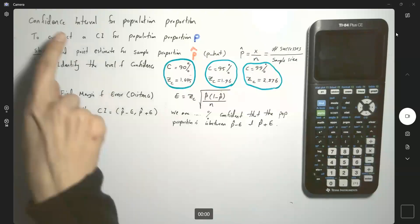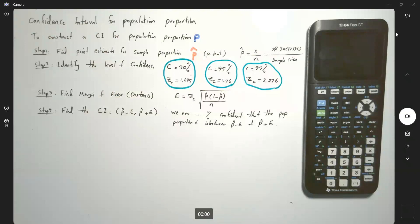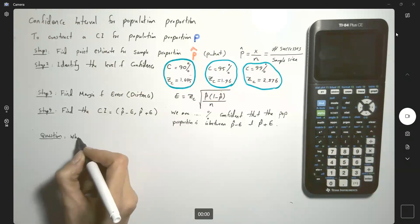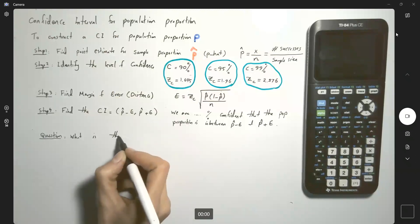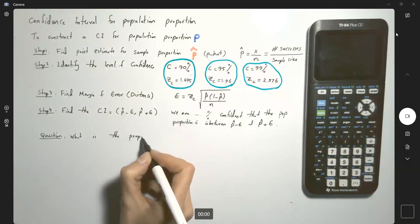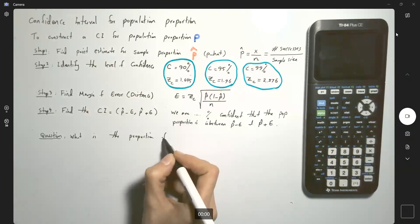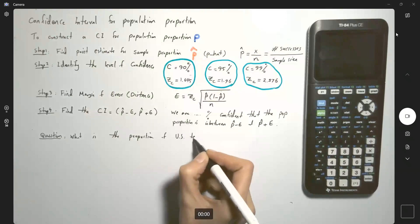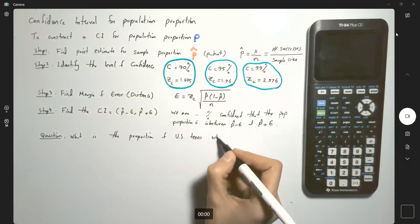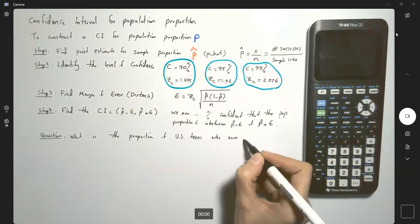Our example to build a confidence interval for population proportion is as follows. Suppose you're interested in knowing: What is the proportion of U.S. teens who own a cell phone?